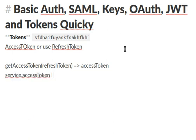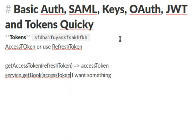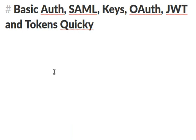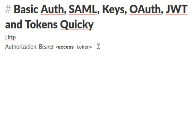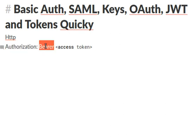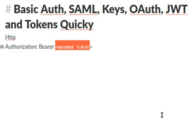So you do service.accessToken — I want something — or service.getBook and pass the access token. Everything goes through the headers. All the above goes through the HTTP authorization header, which is part of the HTTP protocol. You put the authorization header, you put 'bearer', and then your access token — or your basic authentication. The authorization header is like the king: when you need to call a service, you use the authorization header, write 'bearer', and pass either the access token or the basic authentication.